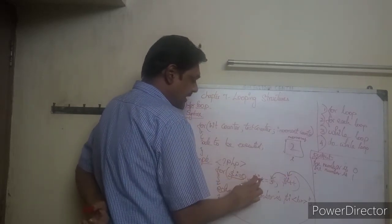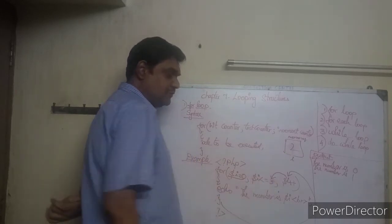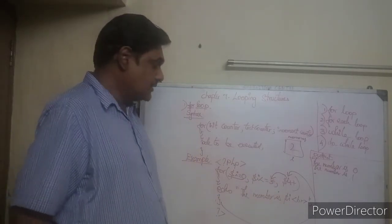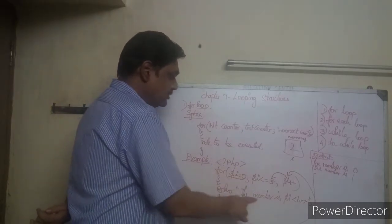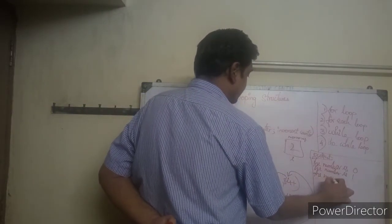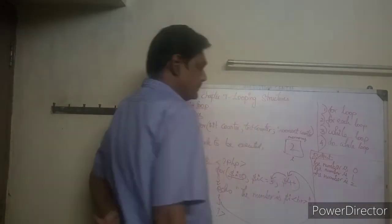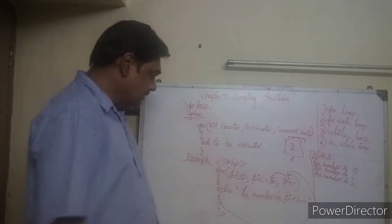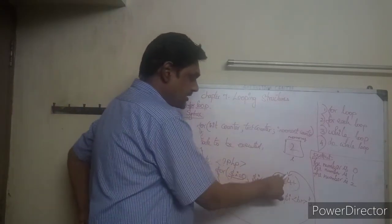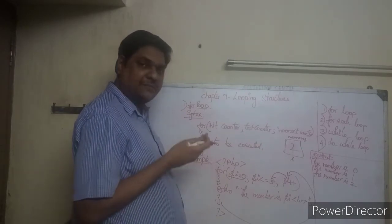To complete the example quickly, let's say `$i <= 5`. So `i` is now 2. Is 2 less than or equal to 5? True. So it will print 'The number is 2'. Again close curly braces, it goes back to the increment counter, and `i` becomes 3.